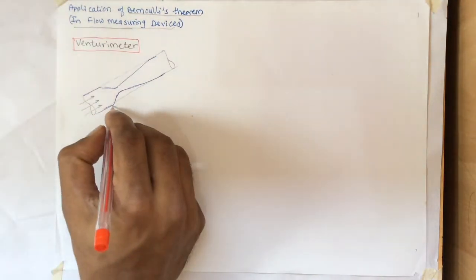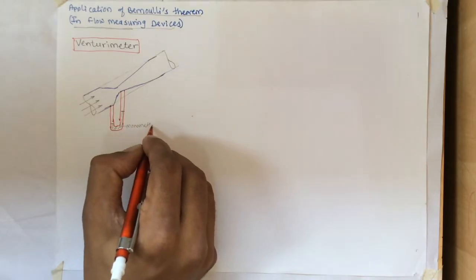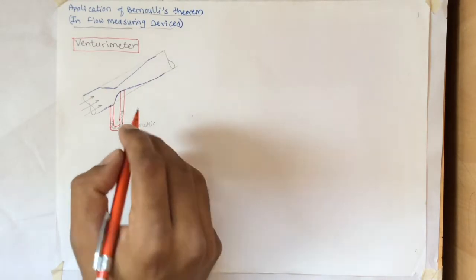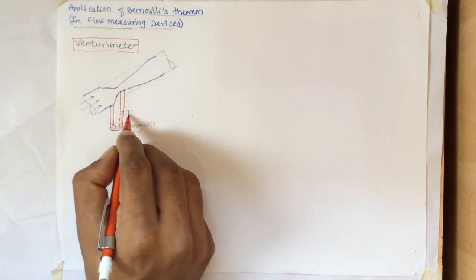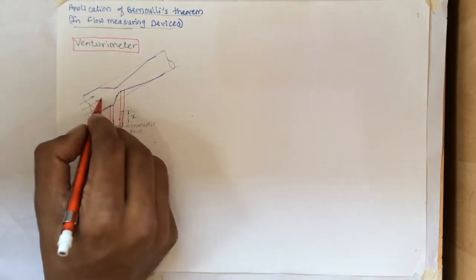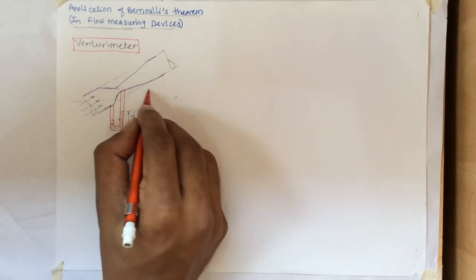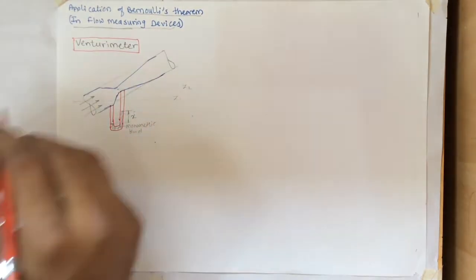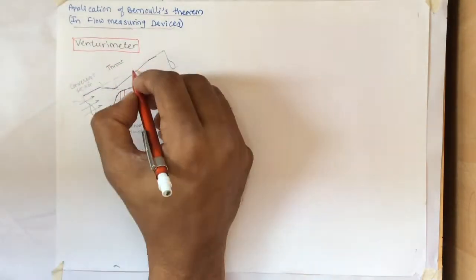Here we attached U-tube manometer with some manometric fluid. As the flow takes place, it will show some readings, and that reading we consider it as X. These are datums. This is Z1 for inlet, this is Z2 for throat. Let's name them convergence section, throat, divergence section.